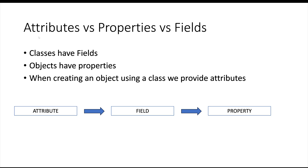You may hear the terms attributes, properties, and fields used interchangeably — they're technically not interchangeable. In informal settings with other coders it doesn't really matter, but in documentation it's important to get the distinction correct. When writing our class definition, we create it using fields — much like spaces in a spreadsheet or database. Once we create an object from our class, the information we've provided into those fields is known as the object's properties. For example, an apple has a property of shape — round — and a color — red or green.